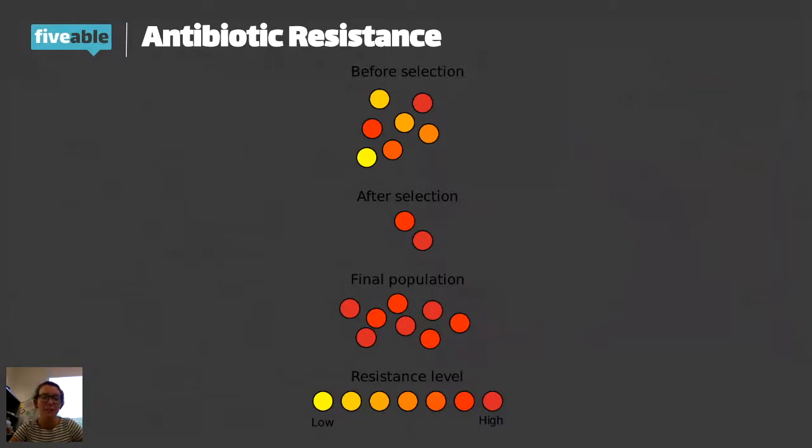And the only ones left are the ones that can already fend off from that antibiotic. So our final population is a really strong population of bacteria that already have some sort of antibiotic resistance. So this comes up on every single AP examination that I have seen because it's evolution happening at rapid speed.